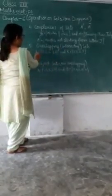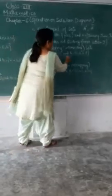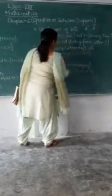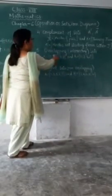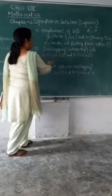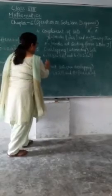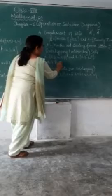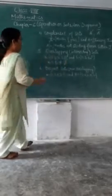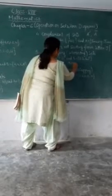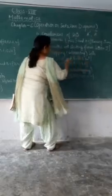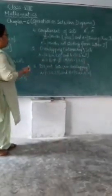The next operation is overlapping or intersecting sets. If set A equals 2, 3, 4, 5, 6 and B equals 0, 3, 6 and 9, then 3 and 6 are common in both A and B. If some elements of A belong to set B, then this kind of set is called an overlapping set. Here A intersection B is not equal to the null set — A intersection B equals 3 and 6. These kinds of sets are called overlapping or intersecting sets.